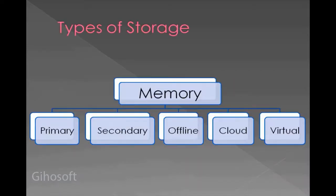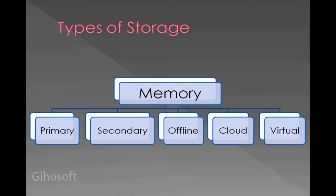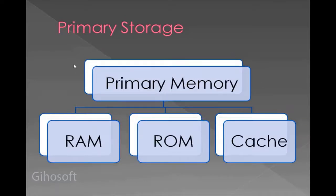There are five types of storage or memory. The first one is primary storage or primary memory, then we have secondary memory or secondary storage, then we have offline storage, then we have cloud storage, and virtual memory. Cloud and virtual have been recently added in the new syllabus, whereas the other three have been there since 2015 in the old syllabus.